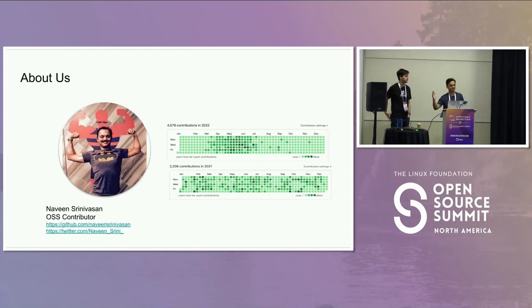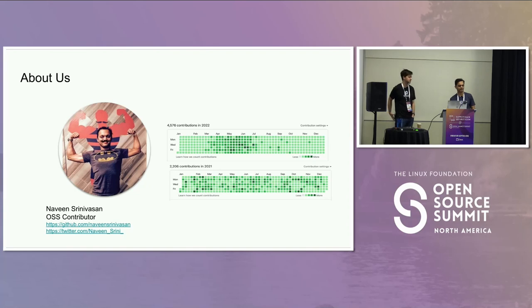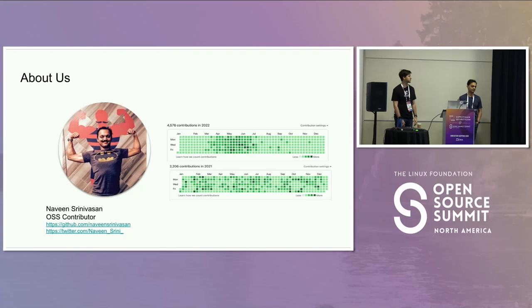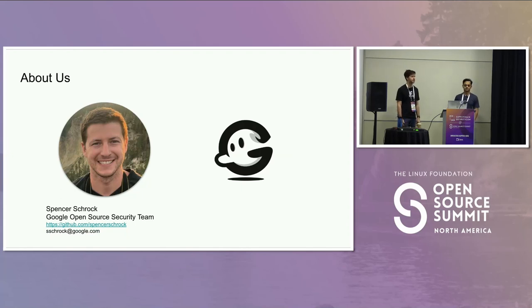I'm Naveen Srinivasan. I'm excited to be speaking at Supply Chain Security this year. I'm all about open source and supply chain security. I'm one of the maintainers of Scorecard and a contributor to Sigstore. And I'm Spencer Schrock with the Google Open Source Security team. I was very excited to be in Austin last year with everyone, and even more excited to be speaking this year.